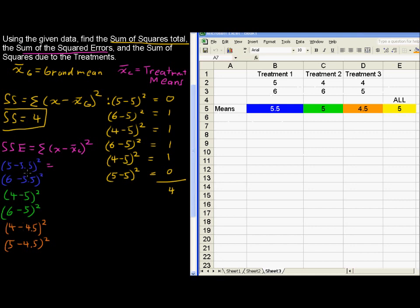If we go through and evaluate each one of those, we get negative 0.5 quantity squared is 0.25, and another 0.25, and a 1, and a 1, and a 0.25, and 0.25. So, the SSE, the sum of the squared errors, equals 3. We've got two of them.